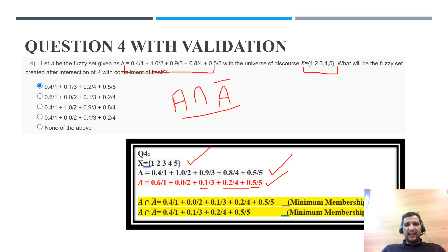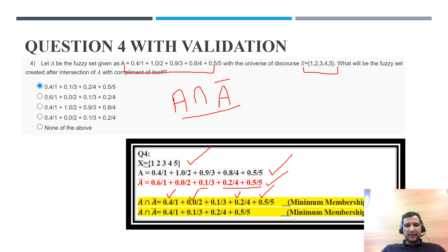Now we find A intersection A-complement. For intersection, we take the minimum membership value. Out of 0.4 and 0.6, minimum is 0.4. Out of 1 and 0, minimum is 0. Out of 0.9 and 0.1, minimum is 0.1. Out of 0.8 and 0.2, minimum is 0.2. Out of 0.5 and 0.5, minimum is 0.5.